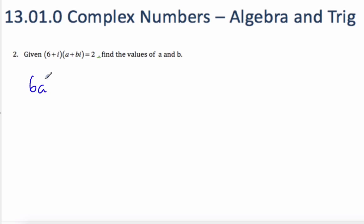And so I get 6a plus 6bi plus ai plus bi squared, which is minus b equal to 2. And you'll start to get quicker at just doing that replacement to make the i squared a negative 1.